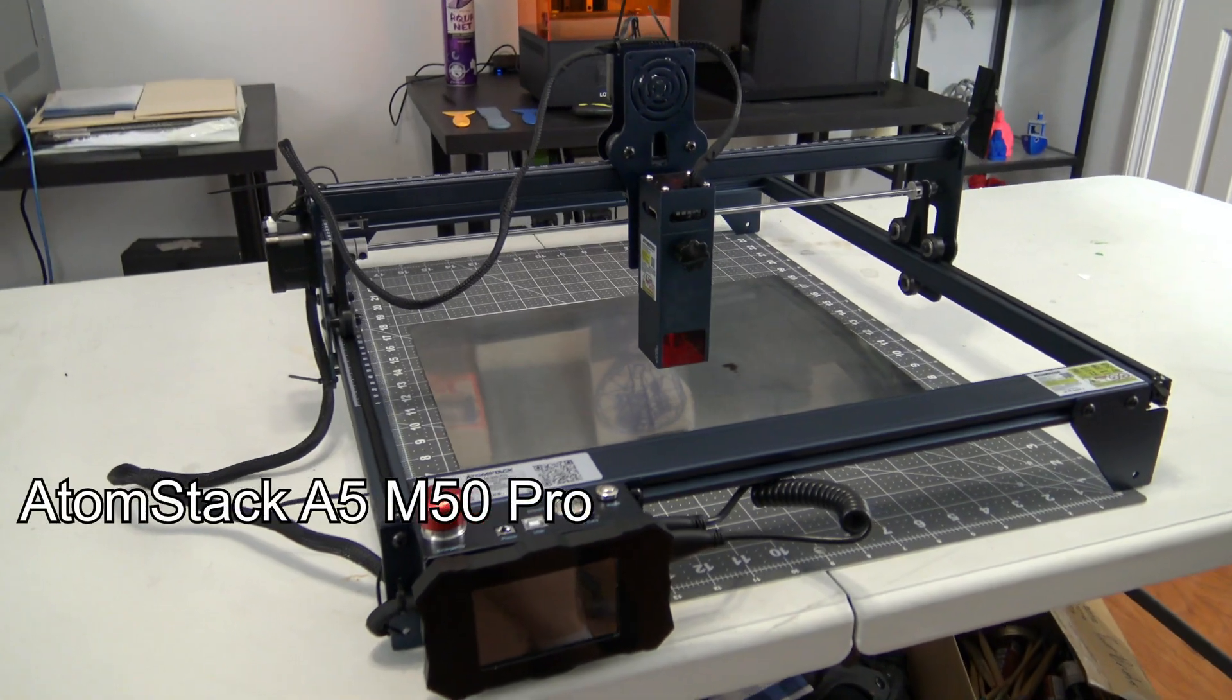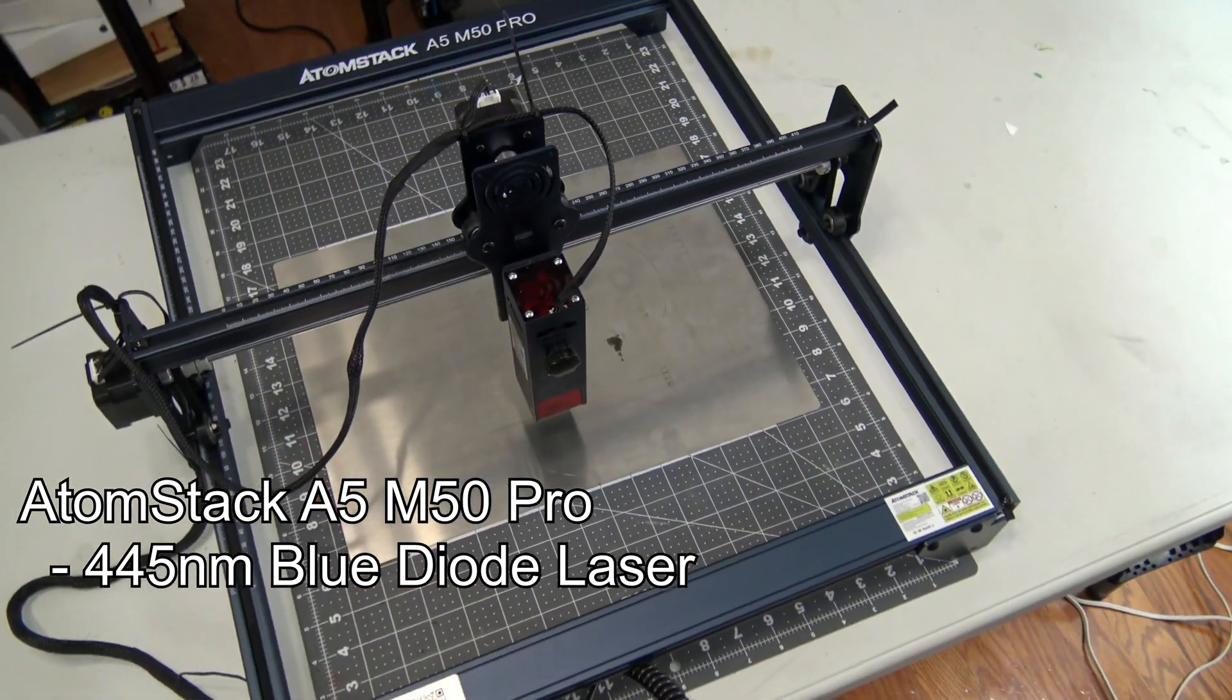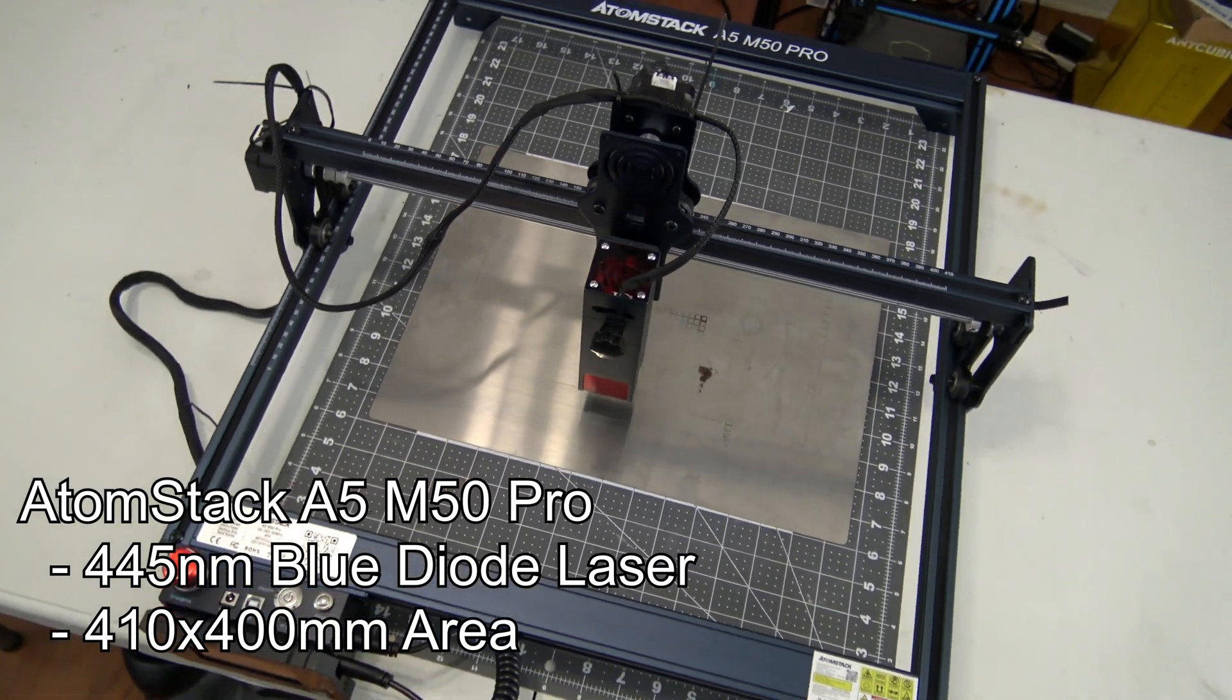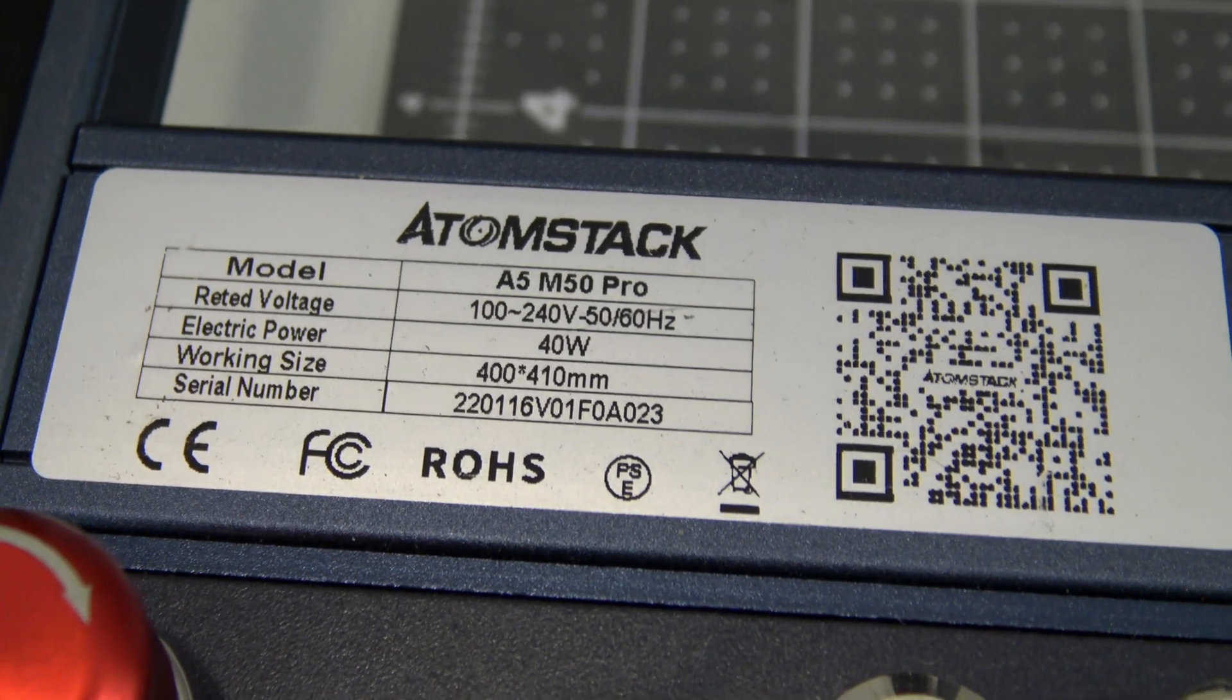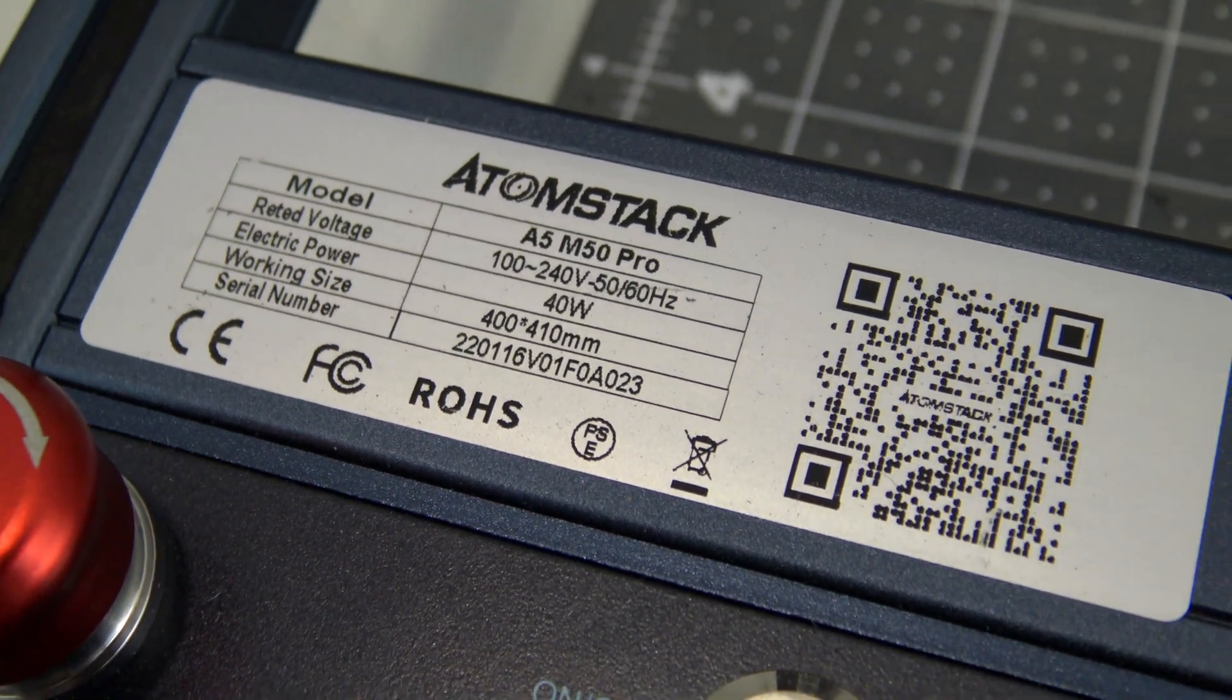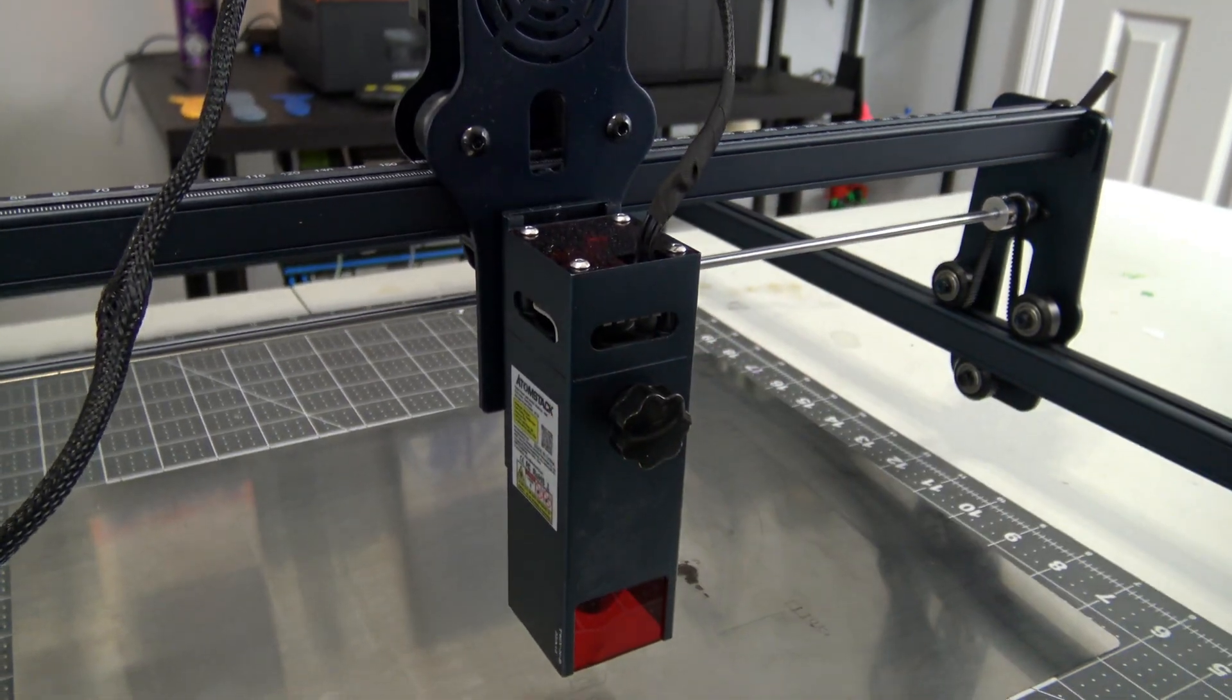The Atomstack A5 M50 Pro is a 445 nanometer blue laser diode benchtop laser engraver. It has a working area of 410 millimeters by 400 millimeters, which could be extended up to 410 millimeters by 850 millimeters with an optional upgrade kit. The laser engraver uses 40 watts of power, with the laser diode outputting 5.5 watts. The laser itself is fixed focus, and you manually adjust the height of the laser head above the material using a handy knob.